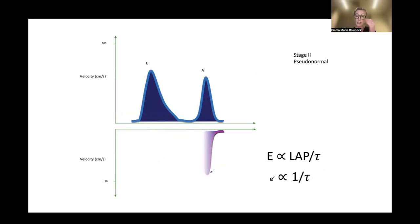The easier thing to do is just look at your E to E-prime values. Often I'll just look at the decel time to see whether it's short, then I'll look at the E-prime value. If that's low, less than 7 centimeters per second on the medial or less than 10 in the lateral, then I know that's got to be pseudonormal rather than normal diastology.